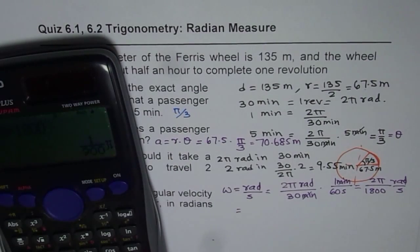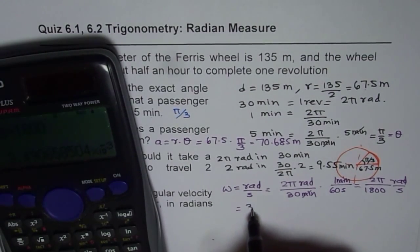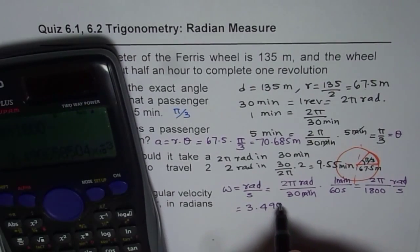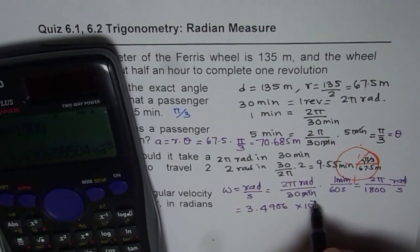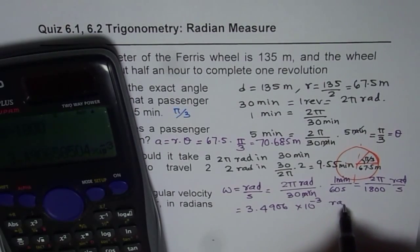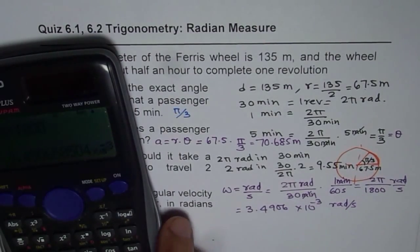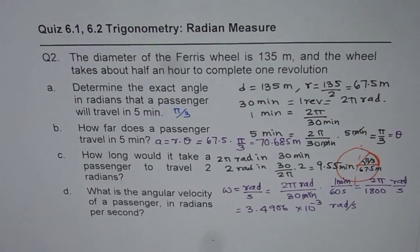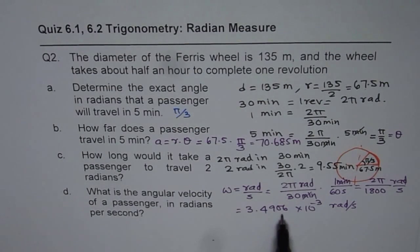That gives us 1 over 900 π, or let's convert to decimals, which is 3.4906 into 10 to the power of minus 3 radians per second. So you could say π by 900 radians per second or 3.4906 times 10 to the power of minus 3 radians per second.